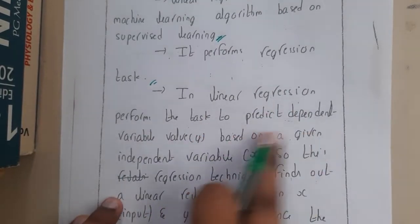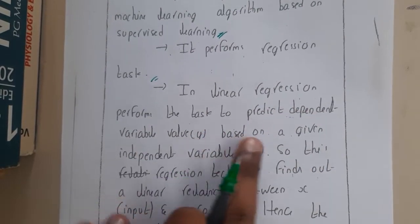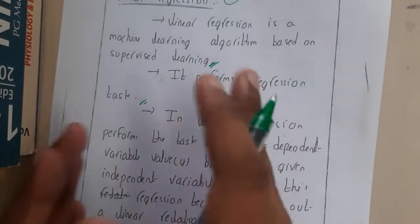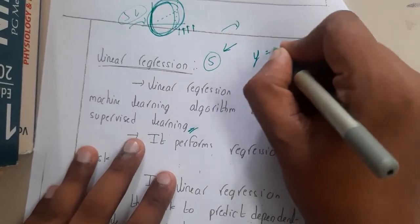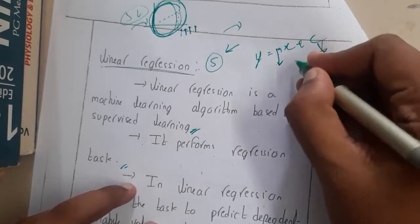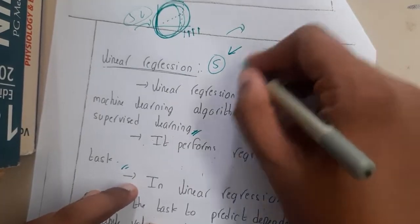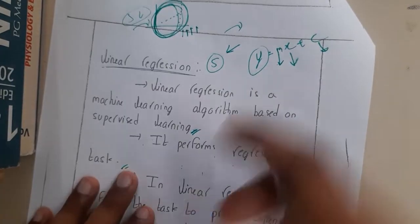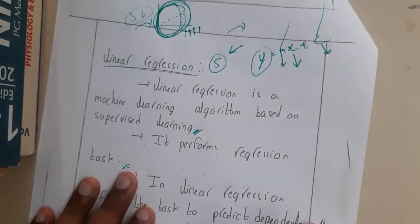In linear regression, the task is to predict dependent variable y based on a given independent value x. I hope everyone knows the equation y = mx + c, where m is the slope, c is the constant, x is our input, and y is our output. With the help of this x value, you can predict y value if you know the slope and constant.